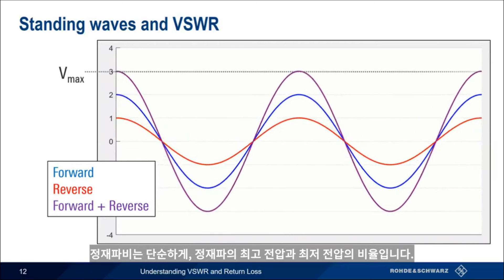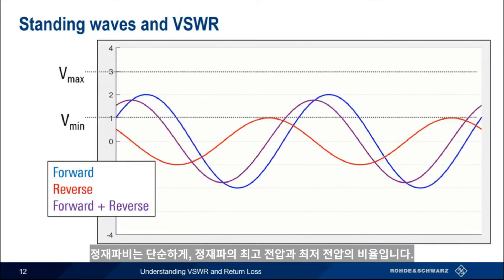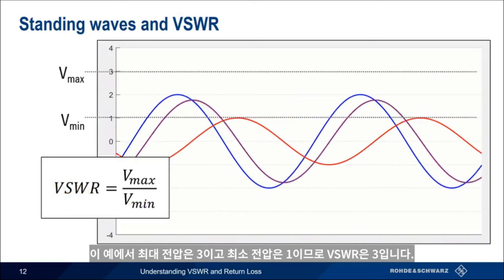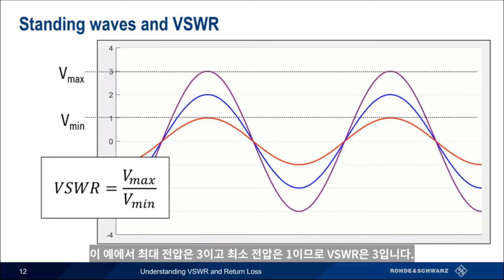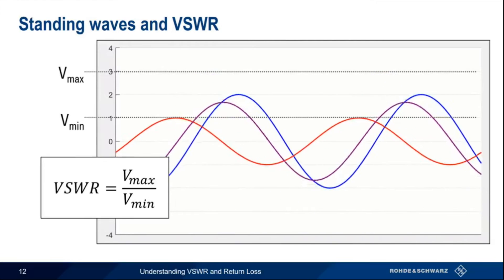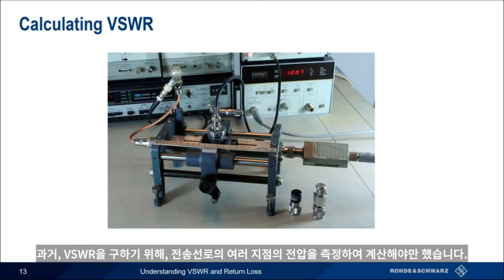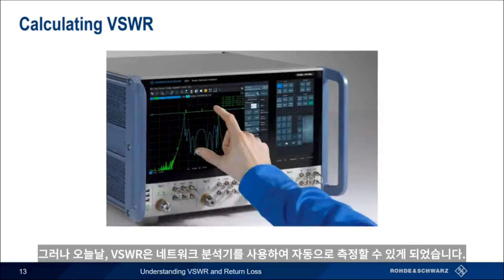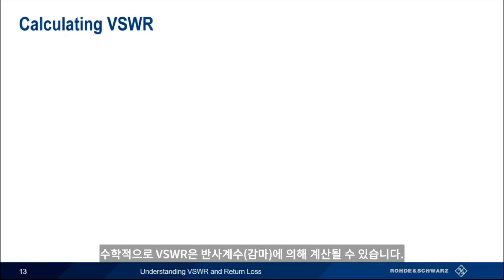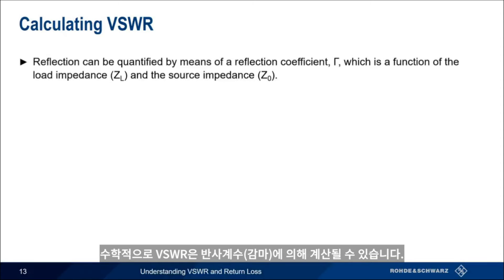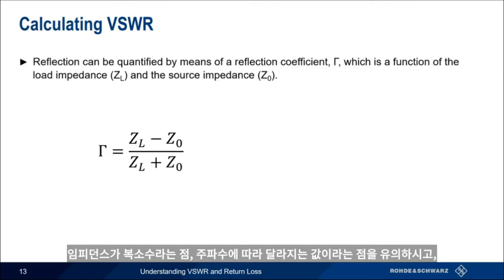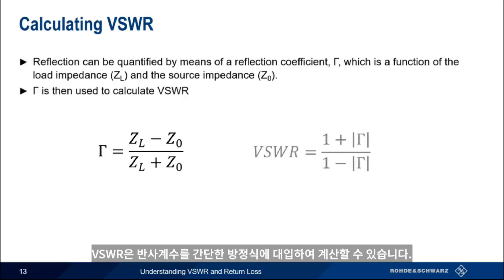Voltage standing wave ratio is simply the ratio of the highest to the lowest voltages in our standing wave. In this example, the peak value is 3 and the minimum value is 1, so we have a VSWR of 3. Many years ago, VSWR was calculated by physically measuring voltages at different points along the transmission line, but today VSWR can be automatically measured and calculated using a network analyzer. Mathematically, we calculate VSWR by determining the reflection coefficient gamma, which is a function of the load impedance Z_L and the source impedance Z_0. Once we have gamma, VSWR is calculated by plugging gamma into another simple equation. We can also easily convert between VSWR and return loss.